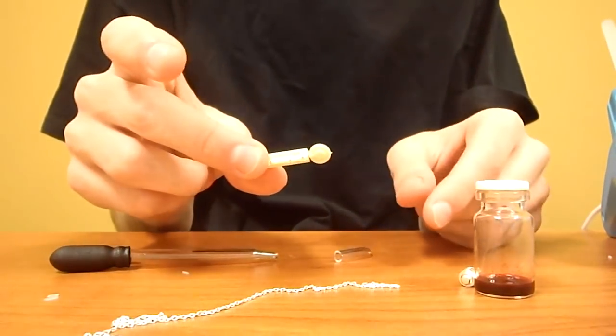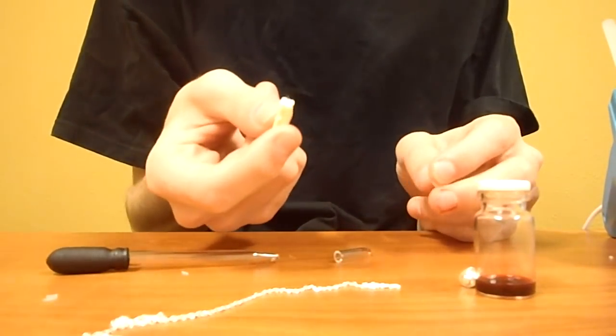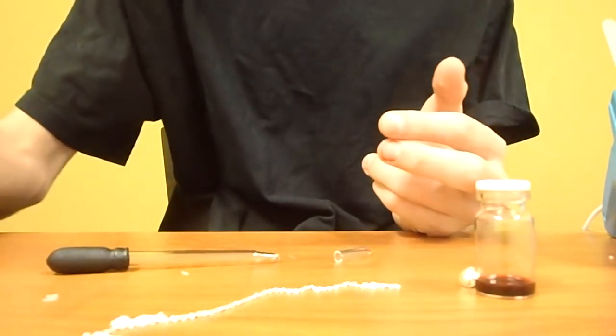To start, you're going to need to prick your finger with a lancet. It's the same sort that diabetics use, 28, 33 gauge, whatever. You're going to get a few drops of blood.